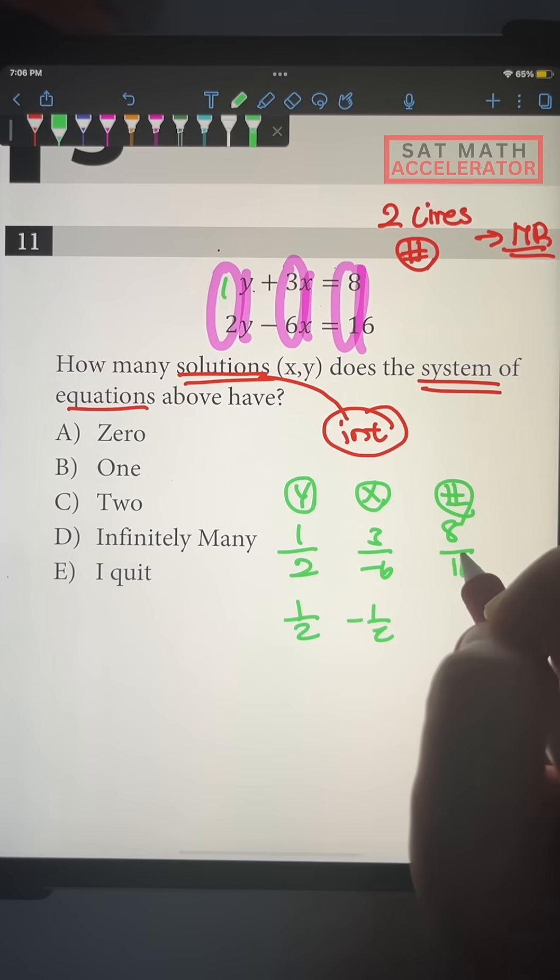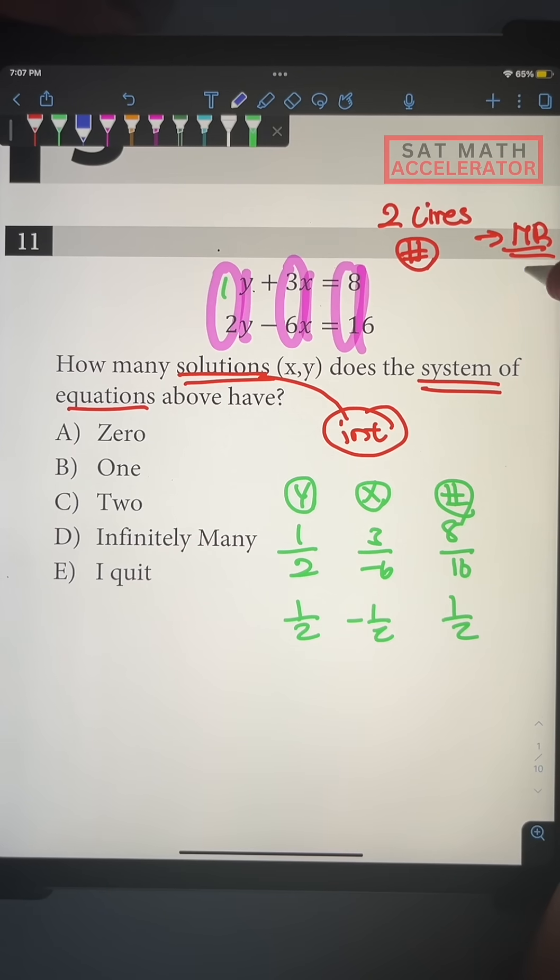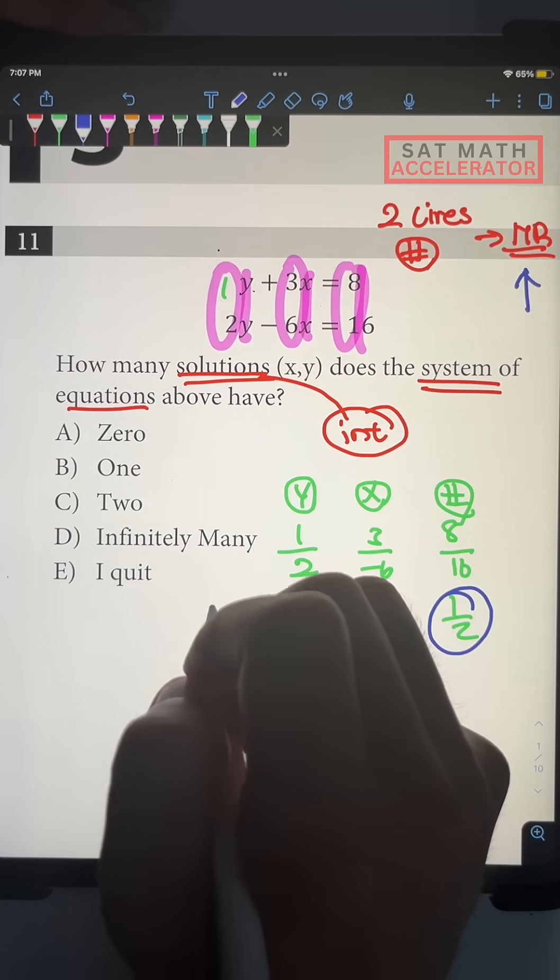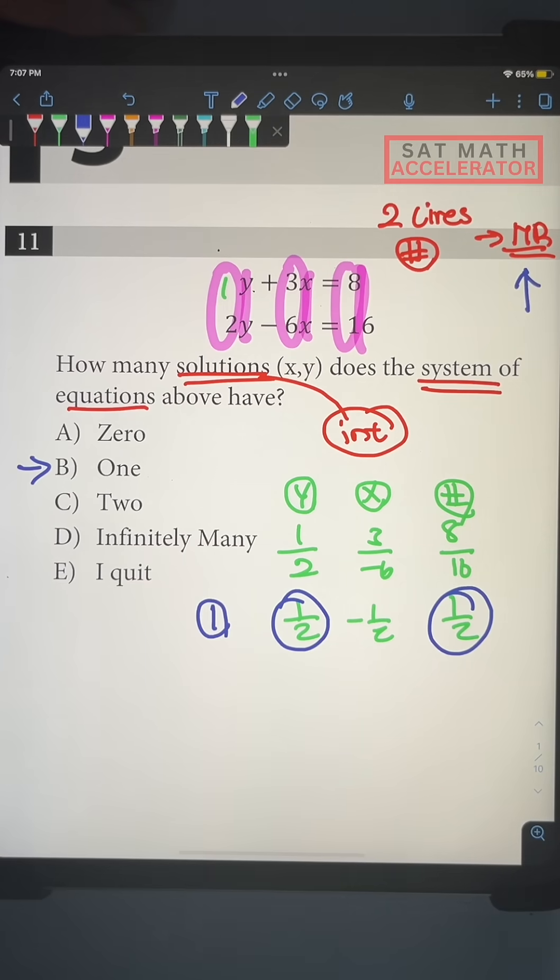We have 1 half, we have negative 1 half, and we have positive 1 half. And according to the matching rule, when y's and numbers are matching, like 1 half and 1 half, then you only have one solution, which means our answer is going to be choice B.